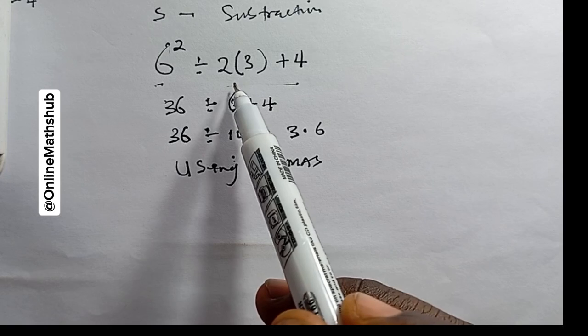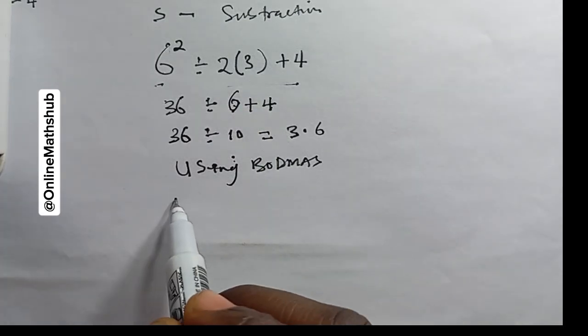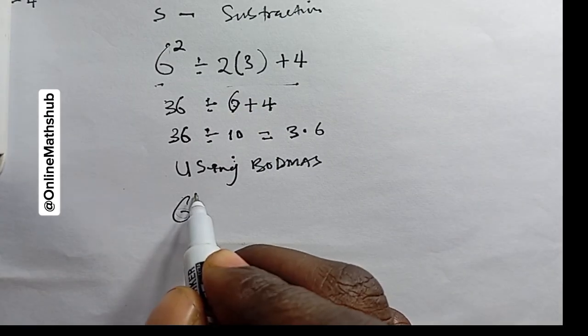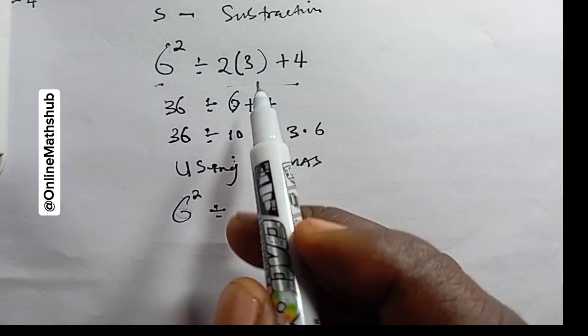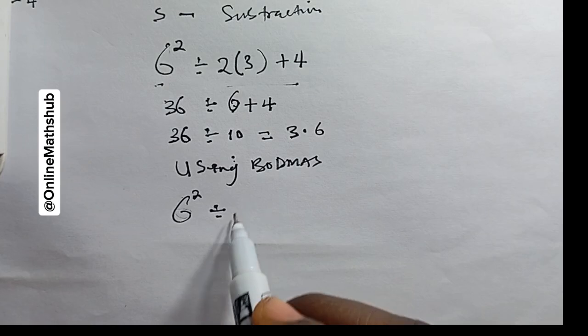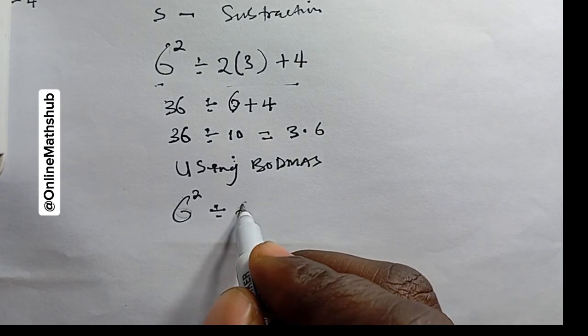You can see we have brackets here, so we simplify that first. We have 6² divided by—if we simplify the bracket—2 times 3, which equals 6, plus 4.